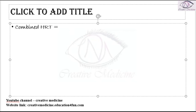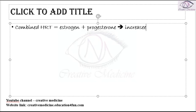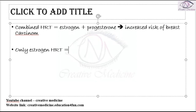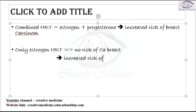If the patient is taking combined hormone replacement therapy — estrogen and progesterone together — this combined hormone therapy increases the risk of breast carcinoma. However, if the patient takes only estrogen-containing hormone replacement therapy, there is no increased risk of breast carcinoma, though there is an associated risk of endometrial carcinoma.